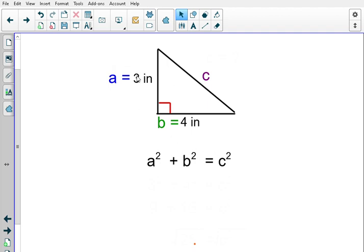Let's go ahead and plug three in for A, four in for B, and see what that looks like. So, we have three squared plus four squared equals C squared.